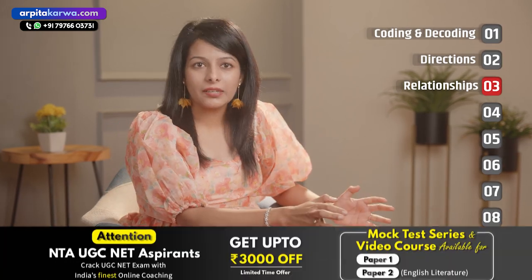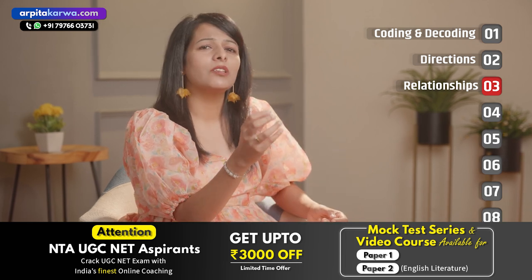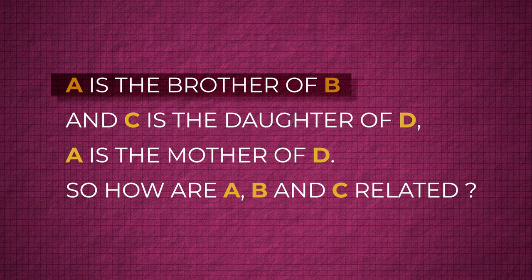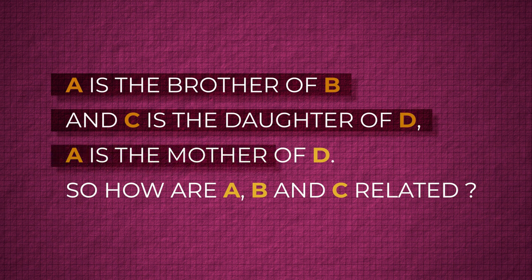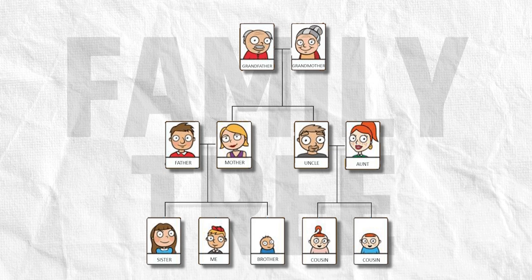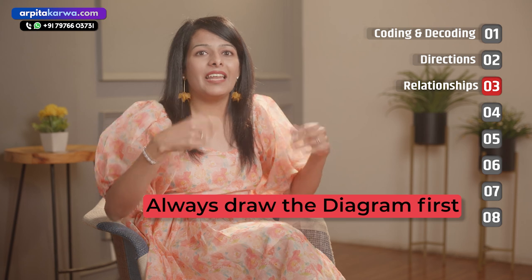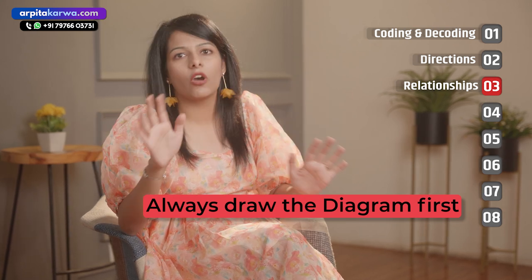The next type of questions that you cannot miss in mathematical reasoning if you want to clear UGC NET are based on relationships. To solve these questions, you need to keep basic knowledge. You will get questions like: A is the brother of B, C is the daughter of D, A is the mother of D — so how are A, B, C related? To solve these questions, start making a family tree diagram. When you make diagrams, it becomes extremely clear and you find the answers very quickly. Never skip making a diagram and never directly try to jump to the answer; always draw a diagram first and then attempt the question.